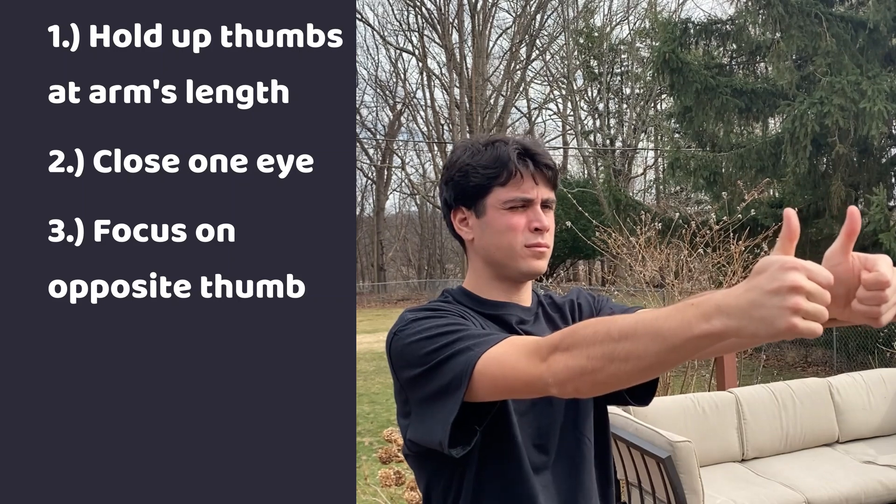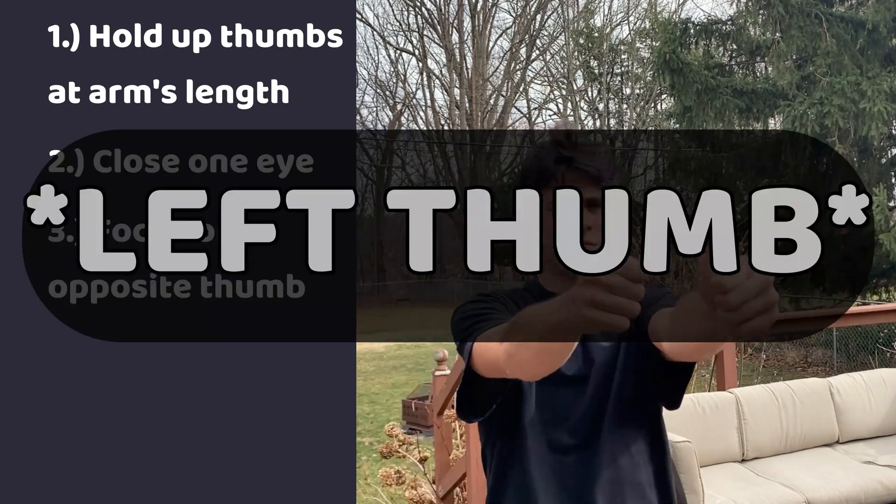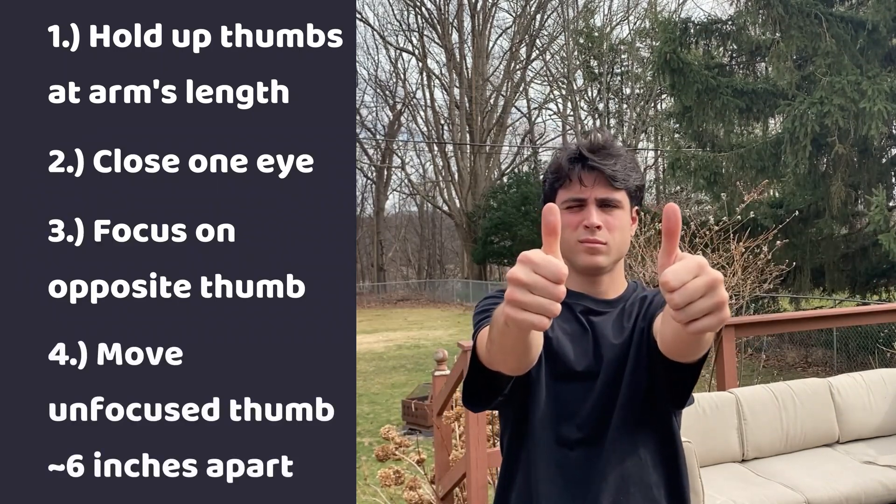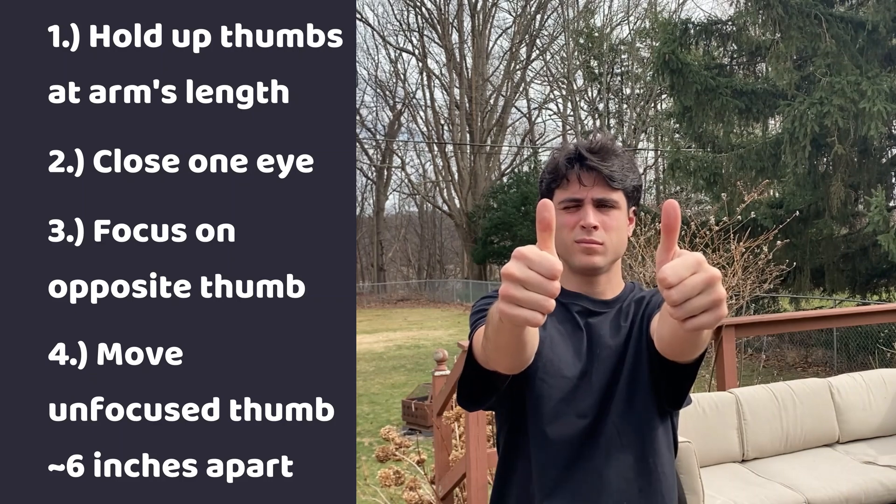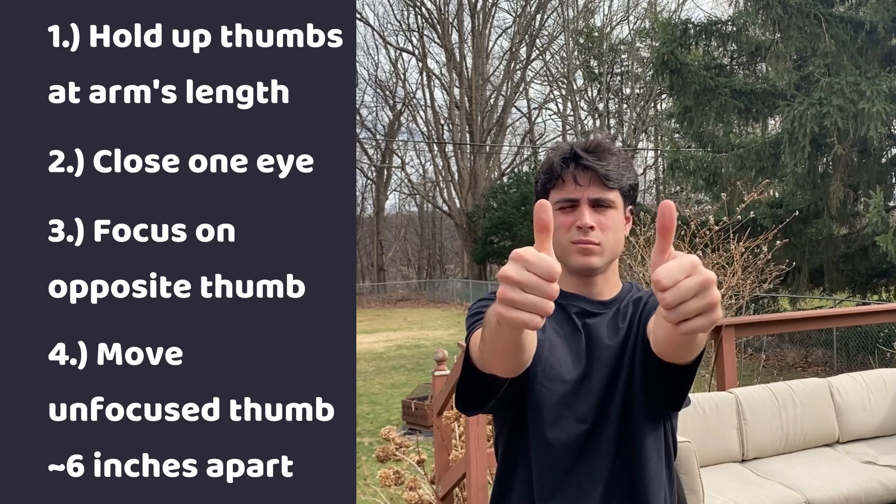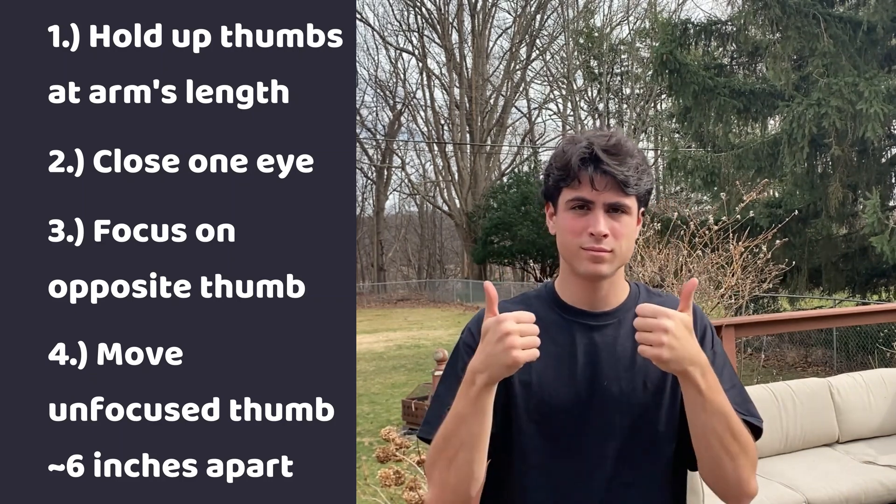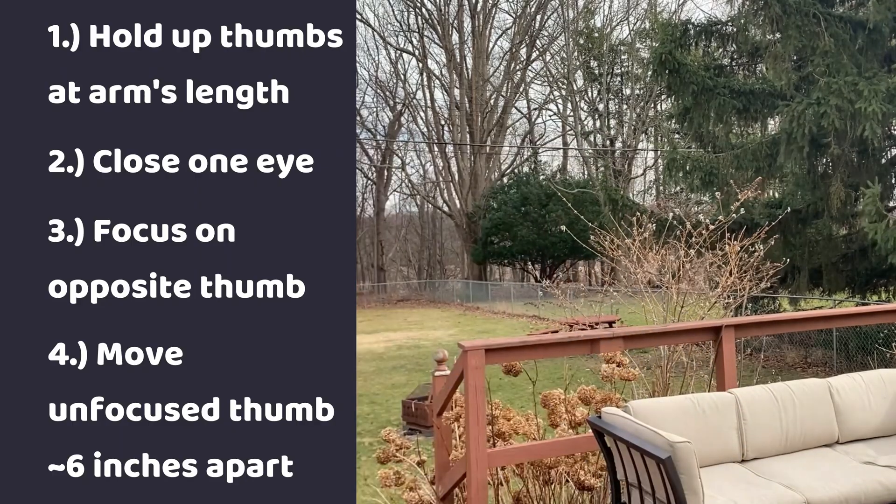So if you've closed your left eye, you're going to want to focus on your right thumb. Step 4, slowly move the unfocused thumb outward at the right spot around 6 inches apart. It will slowly vanish completely.